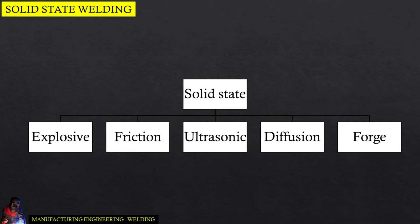There are many versions of solid-state welding. The most popular ones are explosive, friction, ultrasonic, diffusion, and forge welding. In this lecture, we will discuss explosive welding.